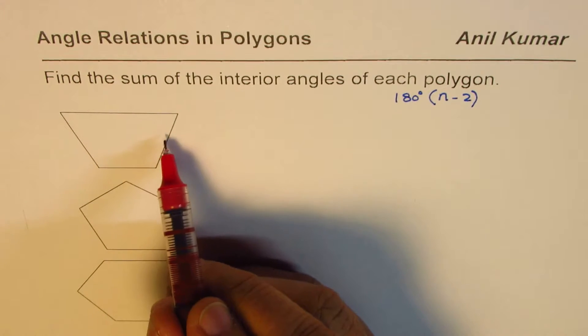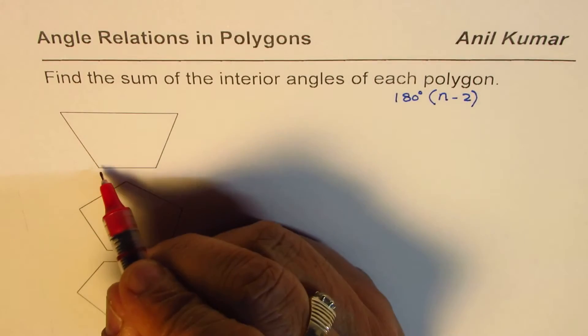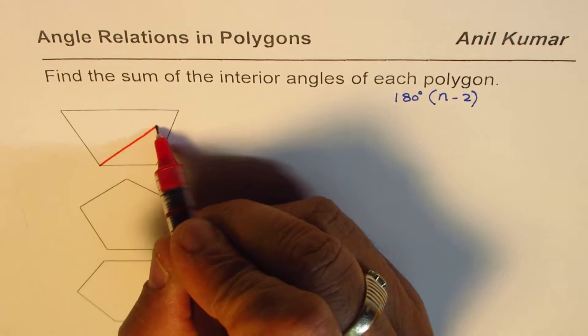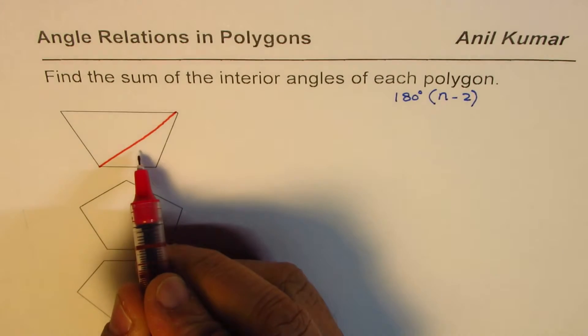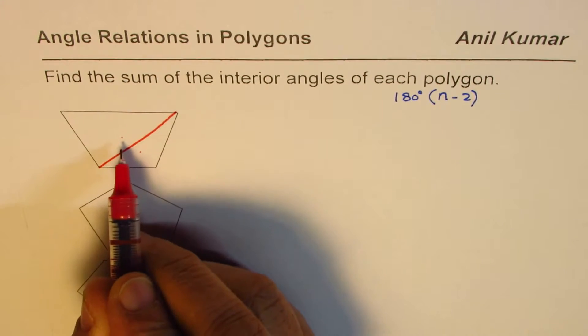It has four sides. Now if I join two vertices, what do I get? I get two triangles. Triangle 1, triangle 2.